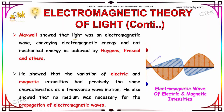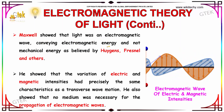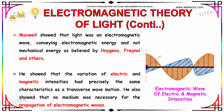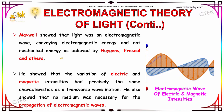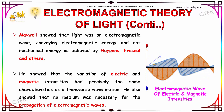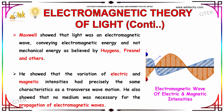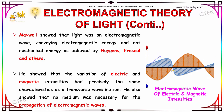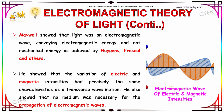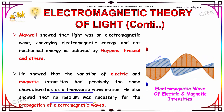Maxwell showed that light was an electromagnetic wave conveying electromagnetic energy, and not mechanical energy as believed by Huygens, Fresnel, and others. He showed that the variation of electric and magnetic intensities have precisely the same characteristics as a transverse wave motion. He also showed that no medium was necessary for the propagation of electromagnetic waves.